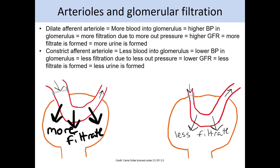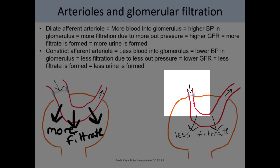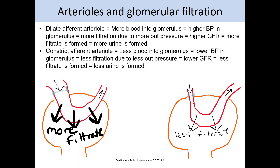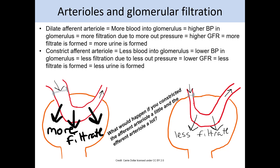If we're forming more filtrate, then typically more urine will be formed. The opposite is also true — if we constrict the afferent arteriole, then less blood gets to the glomerulus, the pressure will be lower, we have less filtration, a lower glomerular filtration rate, less filtrate, and less urine formed. But what would happen if we constricted the afferent arteriole a little, but constricted the efferent arteriole a lot? That means we have a little bit coming in and a very little bit going out — and that's going to make the filtration pressure much higher in the glomerulus. We're going to use that particular process with angiotensin-2.